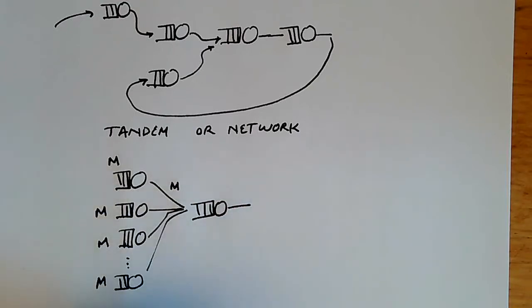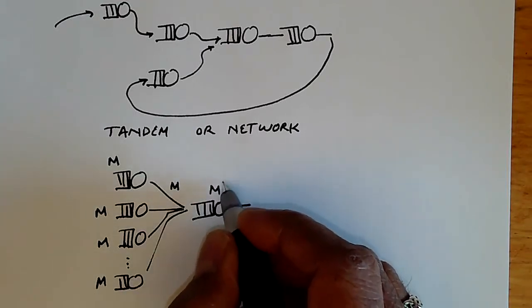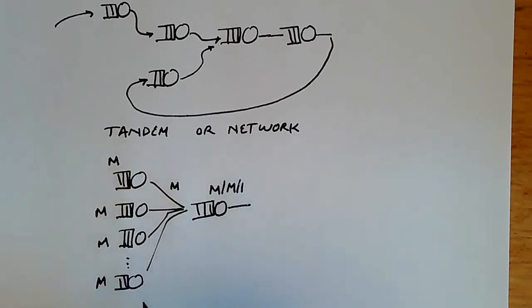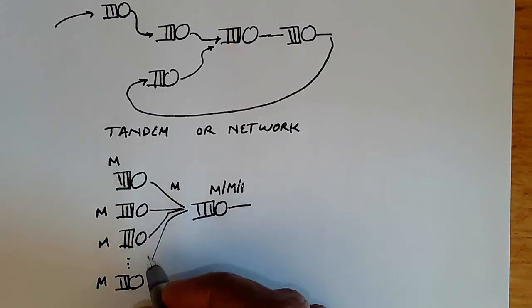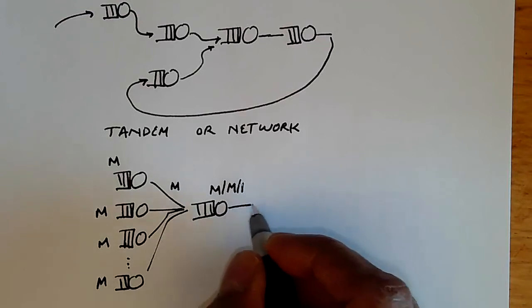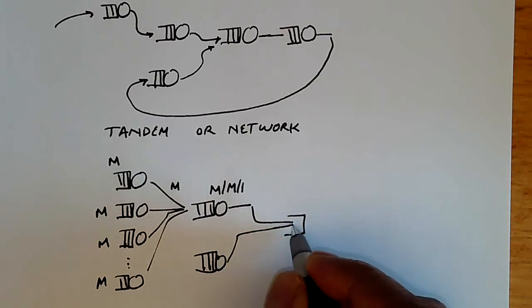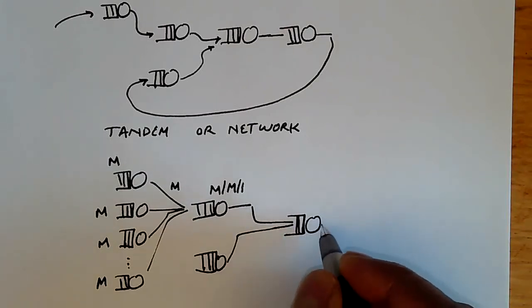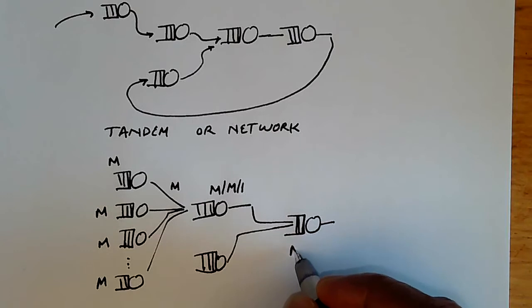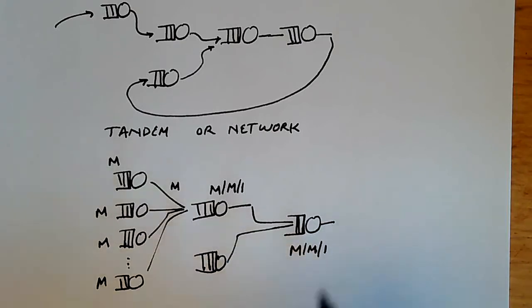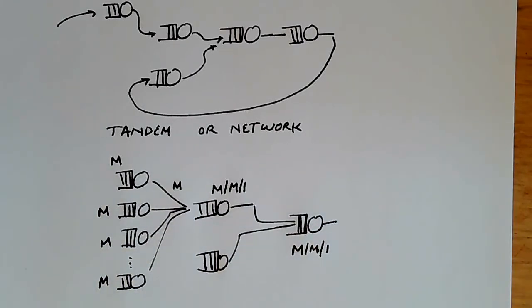Therefore this internal queue which is not visible from the outside can also be modeled in terms of an MM1 queue. The fact that the mixture of Poisson processes is also Poisson allows us to analyze this. Then if this and some other queues join and go to yet another queue inside, that can also be analyzed using an MM1. This is a very nice way of dealing with things; it makes things a little bit less complicated.